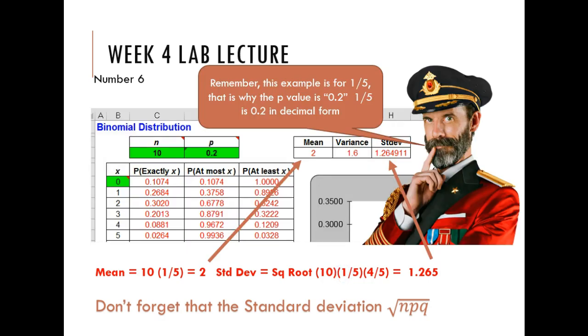If I wanted to do this on the binomial distribution calculator, I would simply go under p and type in equals one-fifth, and I nail the mean and the standard deviation.